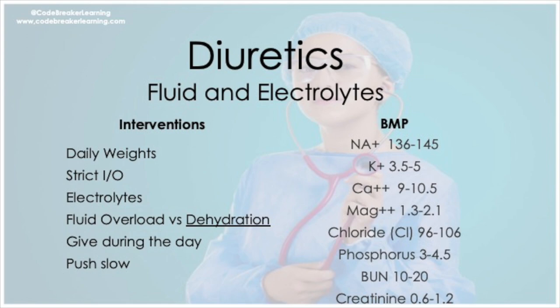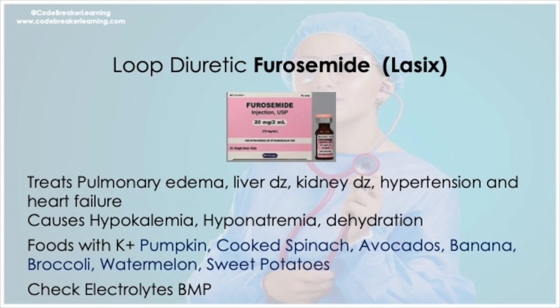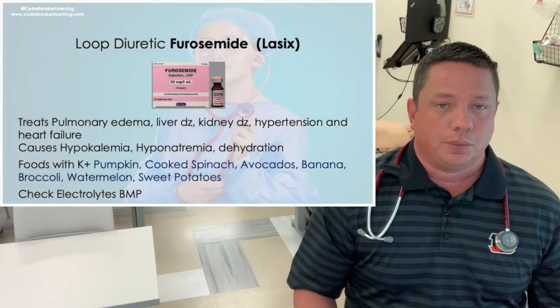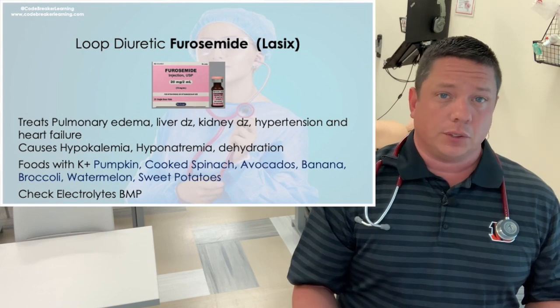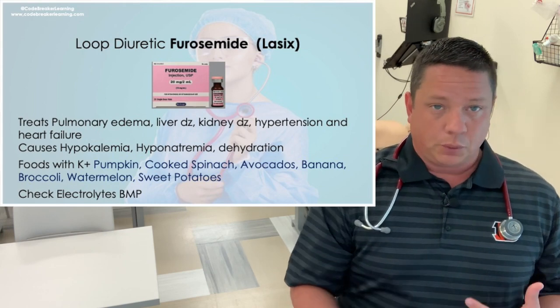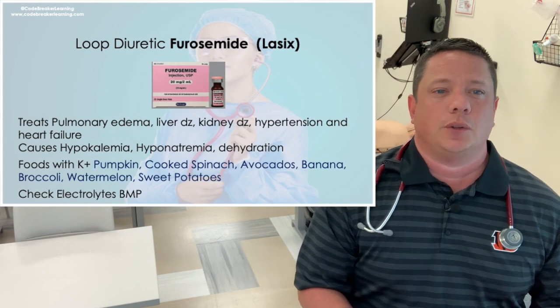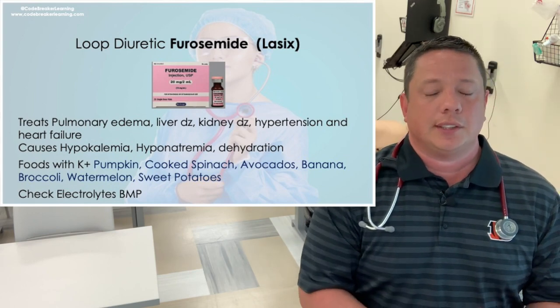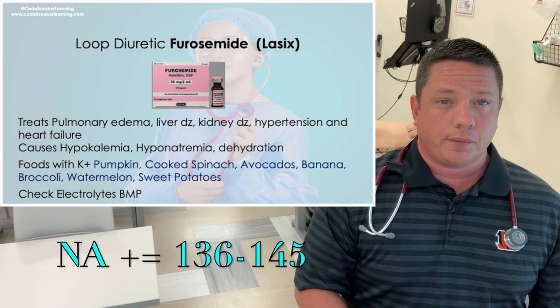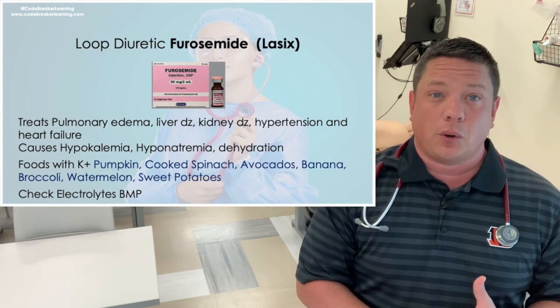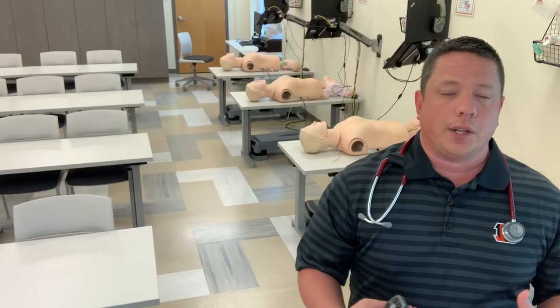The next medication is diuretics. There are four I want to go over. The first is furosemide — it's a loop diuretic given to make patients diurese. It's given to patients with edema or a diagnosis of heart failure. The loop diuretic may cause hypokalemia and also hyponatremia. Potassium range should be 3.5 to 5, and sodium is 135 to 145. Loop diuretics like furosemide can also cause ototoxicity, and you want to encourage foods with potassium.